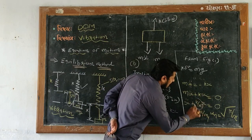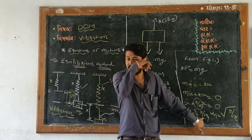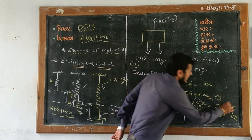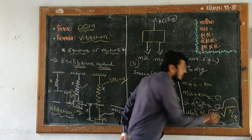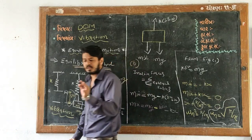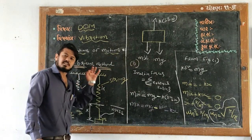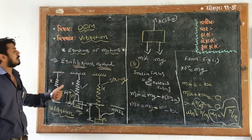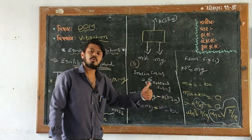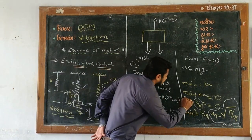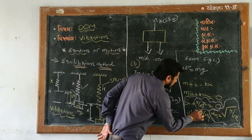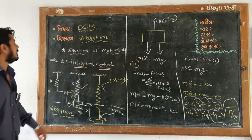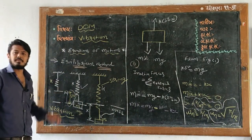The term k/m is known as ωn², so ωn² = k/m, and hence ωn = √(k/m), where ωn is the natural frequency of vibration, k is the spring stiffness, and m is the mass of the system. By the equilibrium method, we can easily find ωn = √(k/m). The equation ẍ + (k/m)·x = 0 is the equation of motion of free vibration using the equilibrium method.